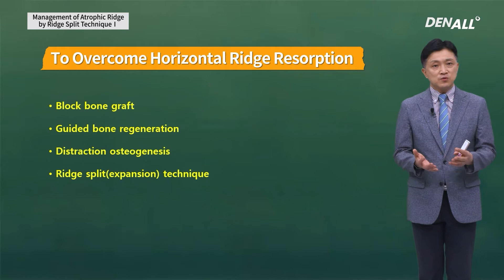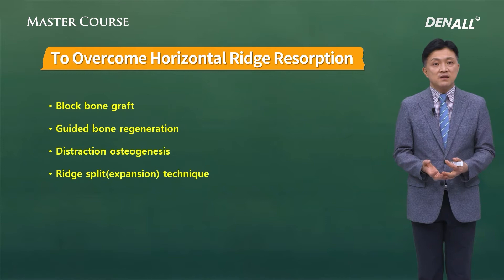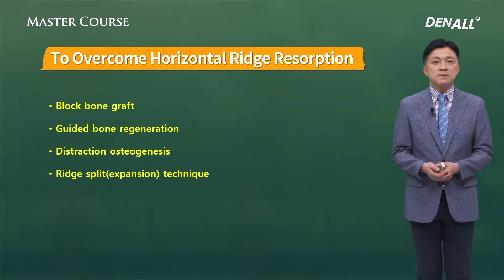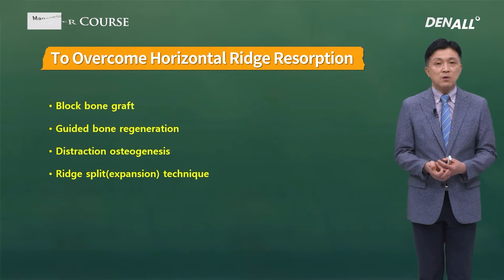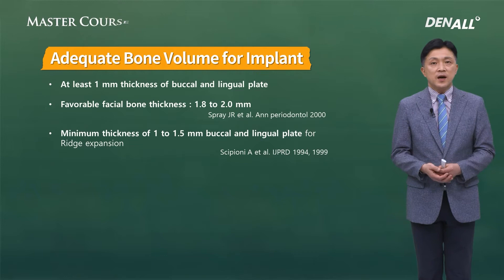In order to overcome horizontal alveolar ridge resorption, there are many methods available: block bone graft, guided bone regeneration, and restoration. Distraction osteogenesis is not used commonly, but can also increase the amount of bone. Ridge split or expansion technique can be utilized to increase the horizontal bone amount.